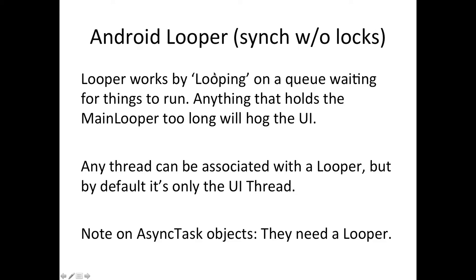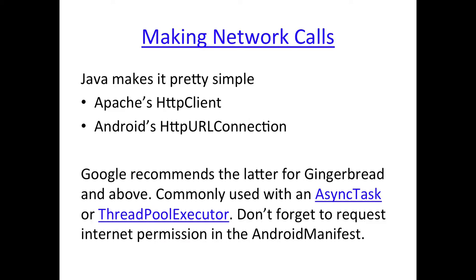When you want to throw something back on the UI thread, you throw it on that looper. Any thread on Android can become a looper, but there's only one main looper, which is the UI thread. Keep in mind that AsyncTasks — a convenience class provided by Android to help move things off the UI thread — actually require a looper. You cannot execute an AsyncTask off any thread that doesn't have a looper. We've run into issues launching an AsyncTask off another thread, making it a third thread — that doesn't work unless a looper is involved.